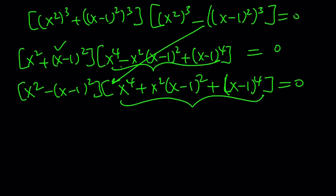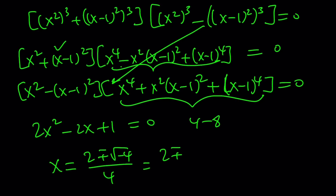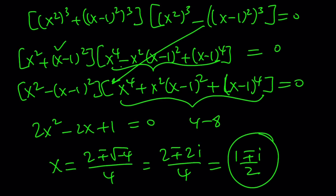This one gives you 2x² minus 2x plus 1 equals 0. The solutions are: negative b plus or minus the square root of b² minus 4ac — that's 4 minus 8, which is negative 4 — divided by 2a. This simplifies to 2 plus or minus 2i, divided by 4, giving x equals (1 ± i) over 2. So we get 2 roots, and they are complex — non-real.